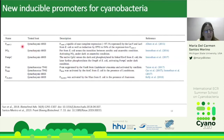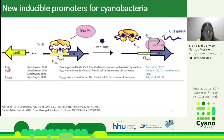Among the newer inducible promoters described for cyanobacteria, a vanillate-inducible promoter works as follows: in the absence of vanillate, the repressor dimerizes and binds to the operator, preventing RNA polymerase from binding. In the presence of vanillate, the molecule binds to the repressor, liberating the operator and allowing RNA polymerase to bind and transcribe the gene of interest.